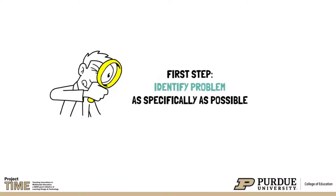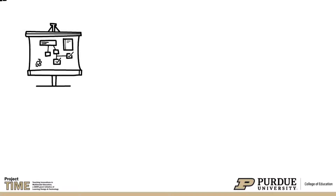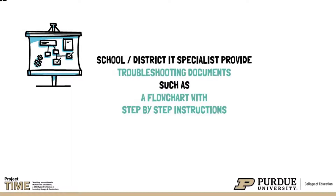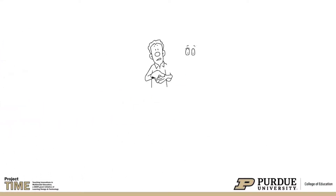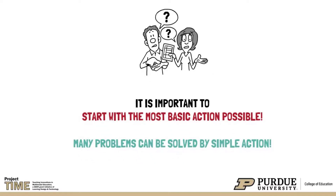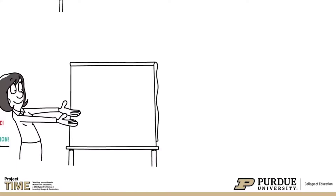As a first step to troubleshooting, it is important to identify the problem as specifically as possible. Oftentimes, school or district IT specialists will provide troubleshooting documentation, such as a flowchart with step-by-step instructions. Always utilize provided documentation along with basic troubleshooting skills. While many basic troubleshooting steps will apply, not all of them apply to every situation. It is important to start with the most basic action possible, as many problems can be solved by a simple action. A basic troubleshooting process contains eight steps or actions.